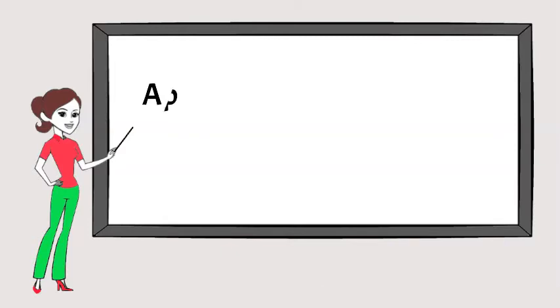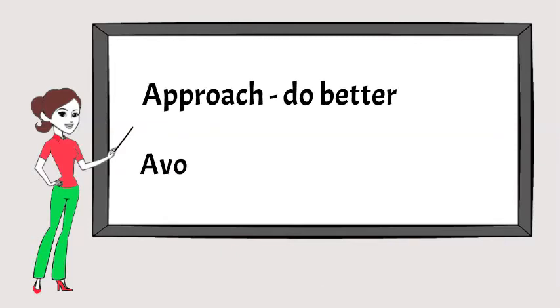Approach describes the intention to demonstrate competence where people are focused on successful outcomes. Avoidance describes the intention to avoid demonstrating incompetence and avoiding negative outcomes.